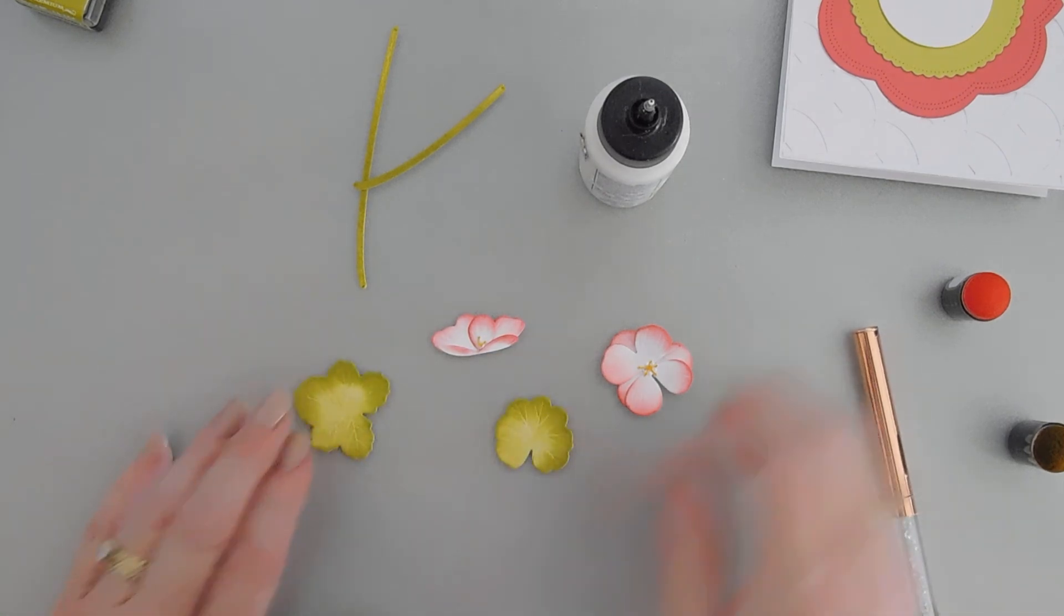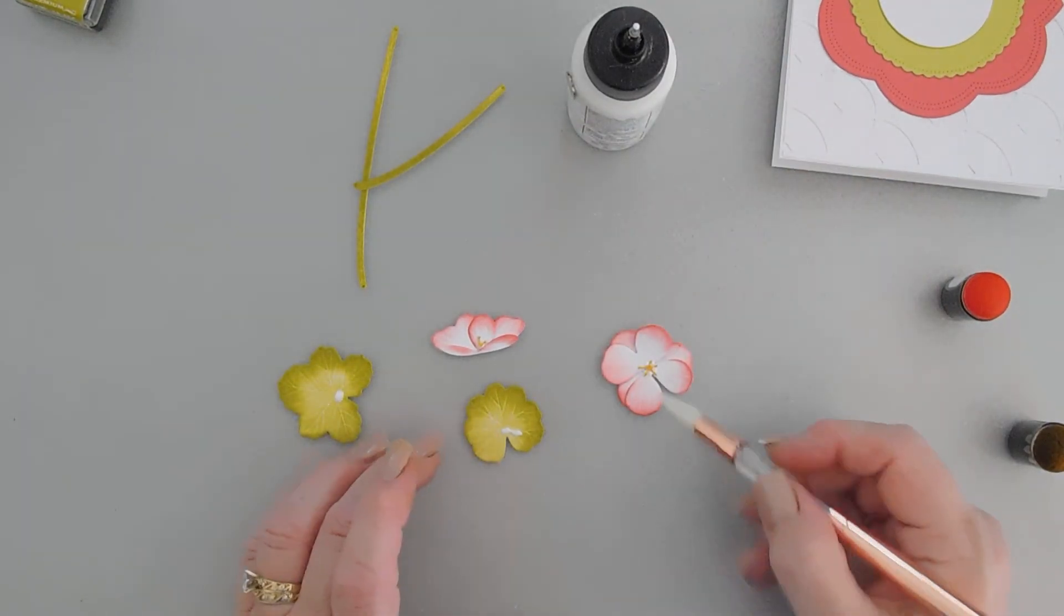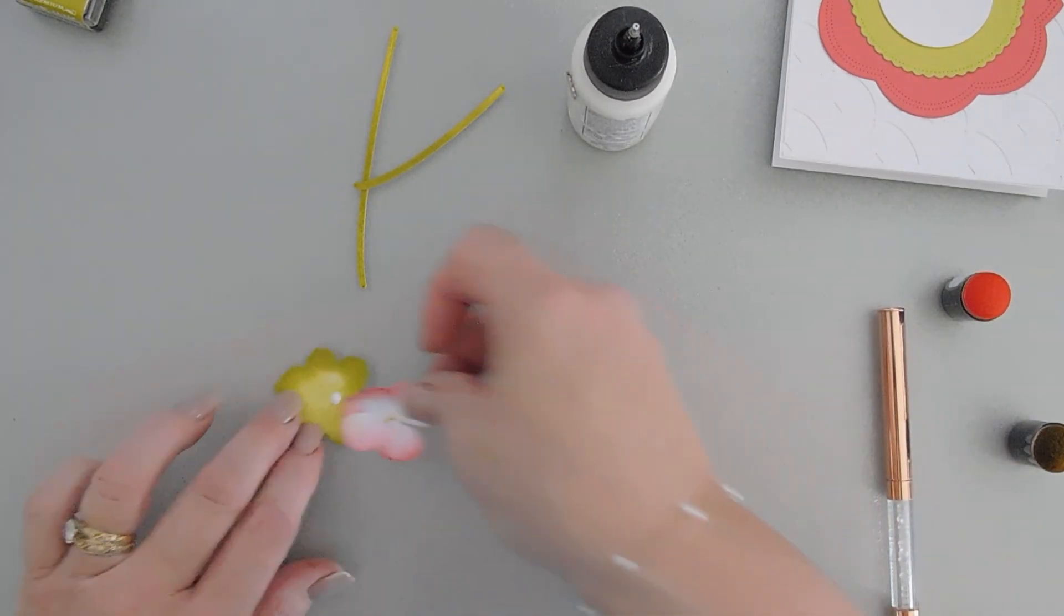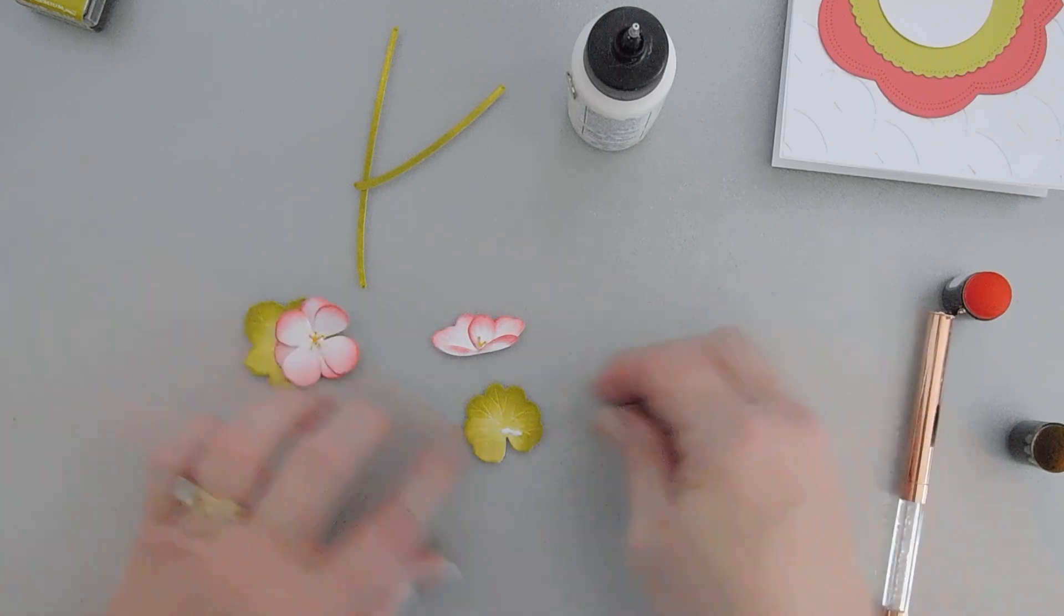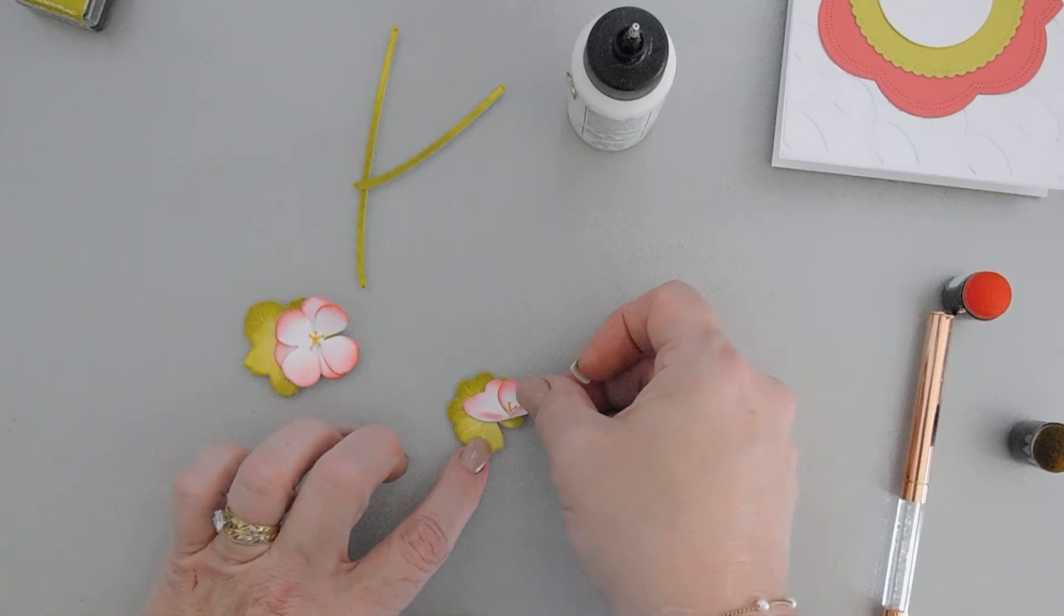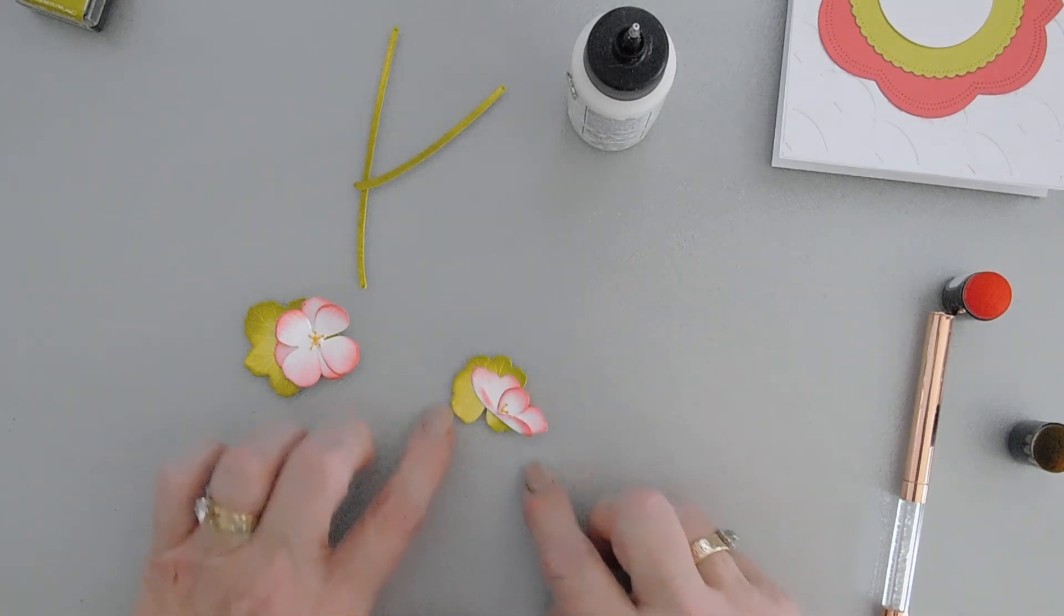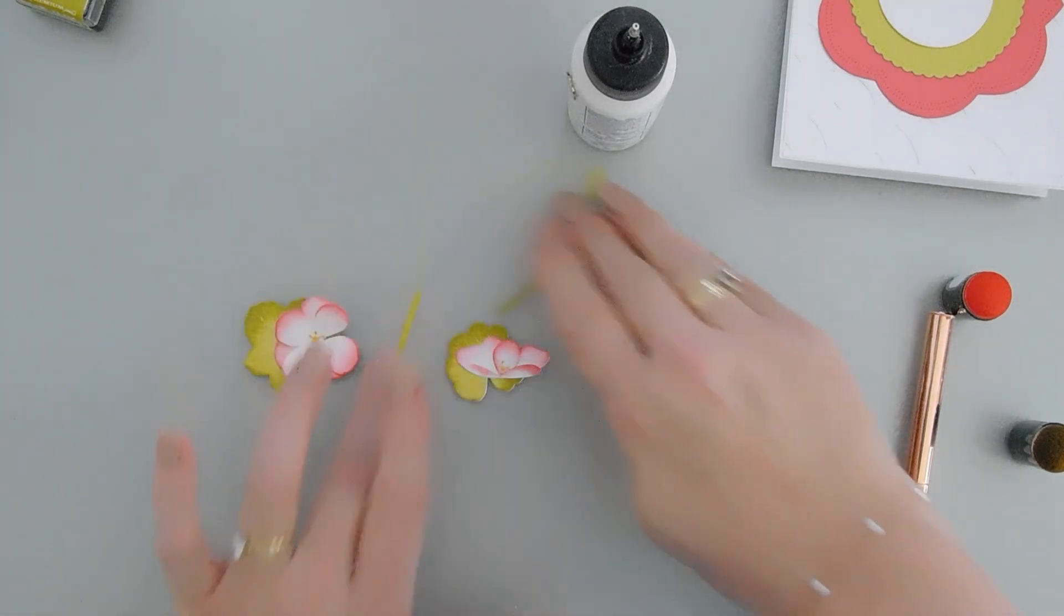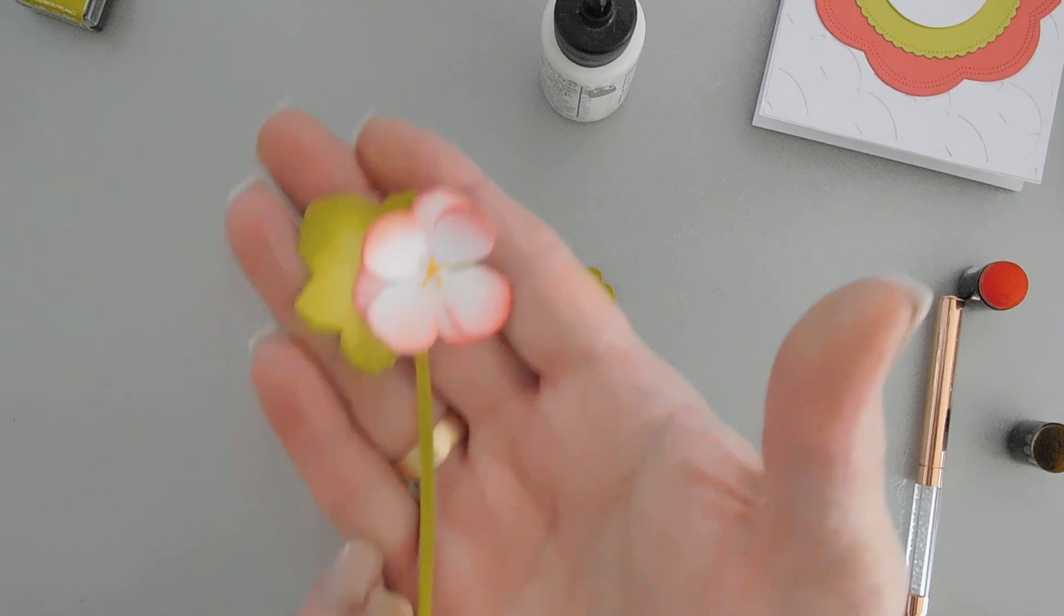And then those are good. Now we're going to attach our greenery. I'll add a little glue and I'll add my flower here to this one. And then I'll add my flower here to this one. I think that looks nice. And then we'll add our stems. And those are our geraniums. I just think they're just so lovely. Look how pretty.